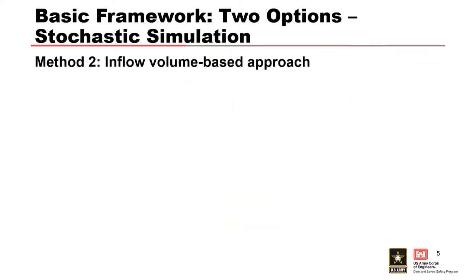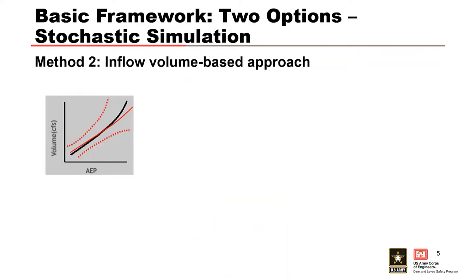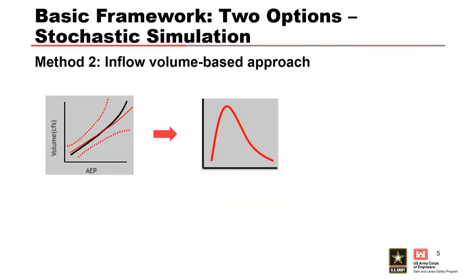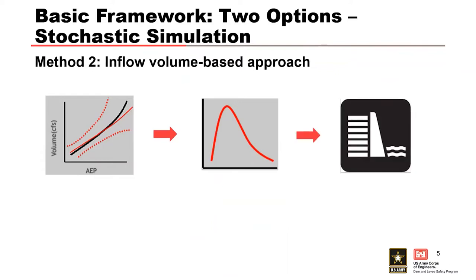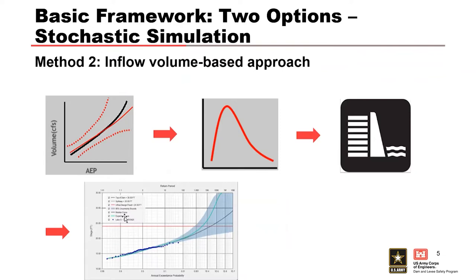Luckily, there is a second option that is less computationally intensive. In this method, we sample inflow volumes from a volume frequency curve. The inflow volume is used to scale an inflow hydrograph shape. The scaled hydrograph is routed through the reservoir model, which is repeated many times to create a series of peak stages to estimate our reservoir stage frequency curve with uncertainty. This method is much simpler and easier to perform, and it is the approach used in RMCRFA.